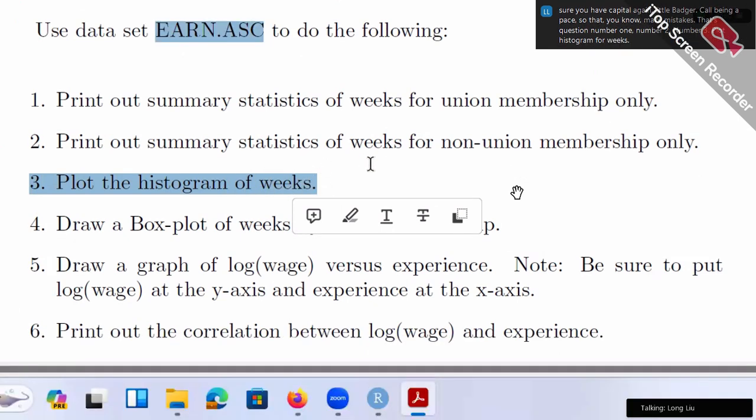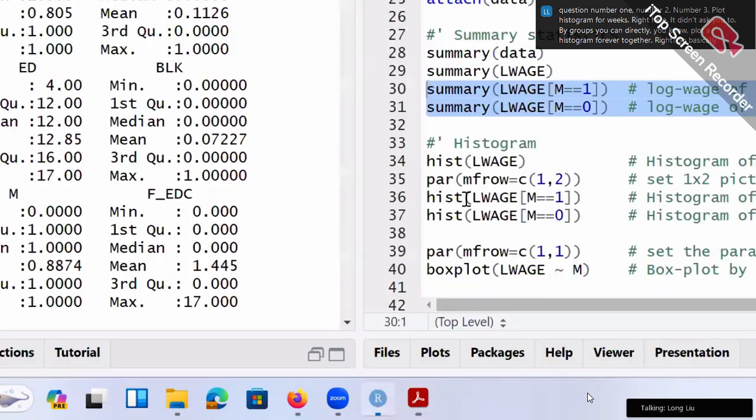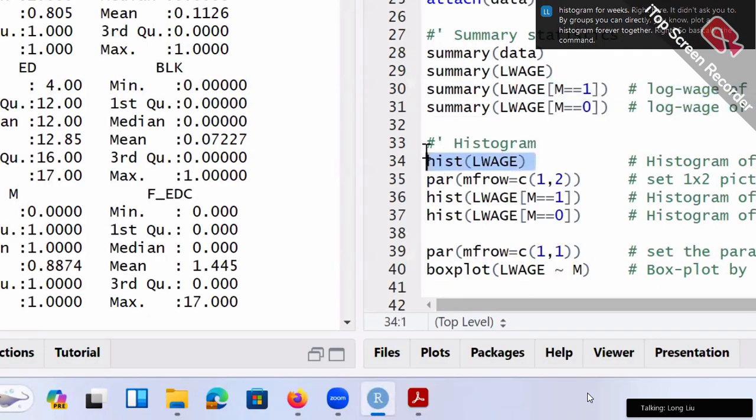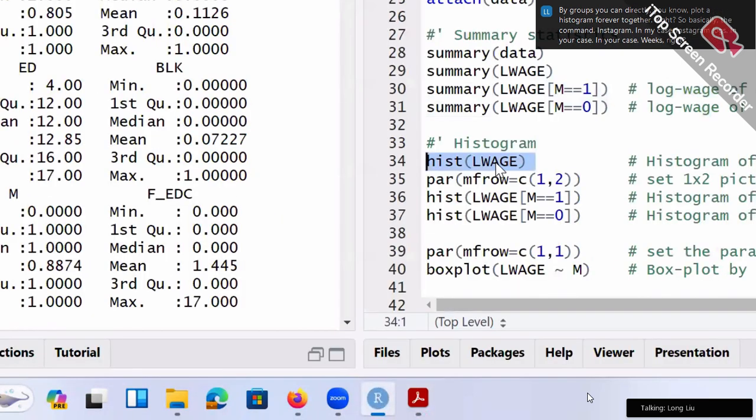Right here, it didn't ask you to by groups. You can directly plot a histogram forever together. So basically the command histogram, in my case, histogram log wage, in your case, weeks. So basically replace the variable log wage by WKS, so that you got the histogram. Very simple.